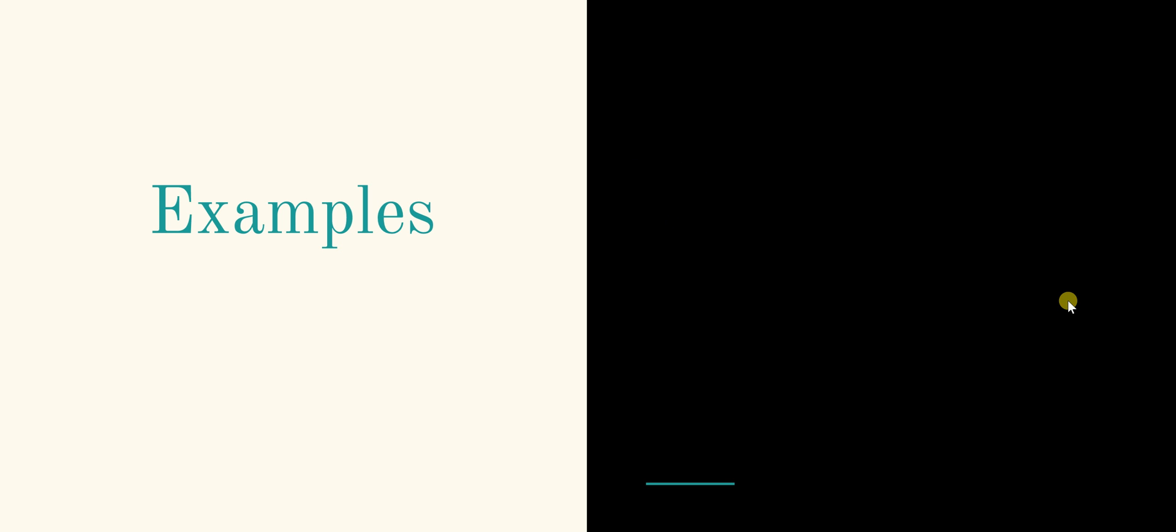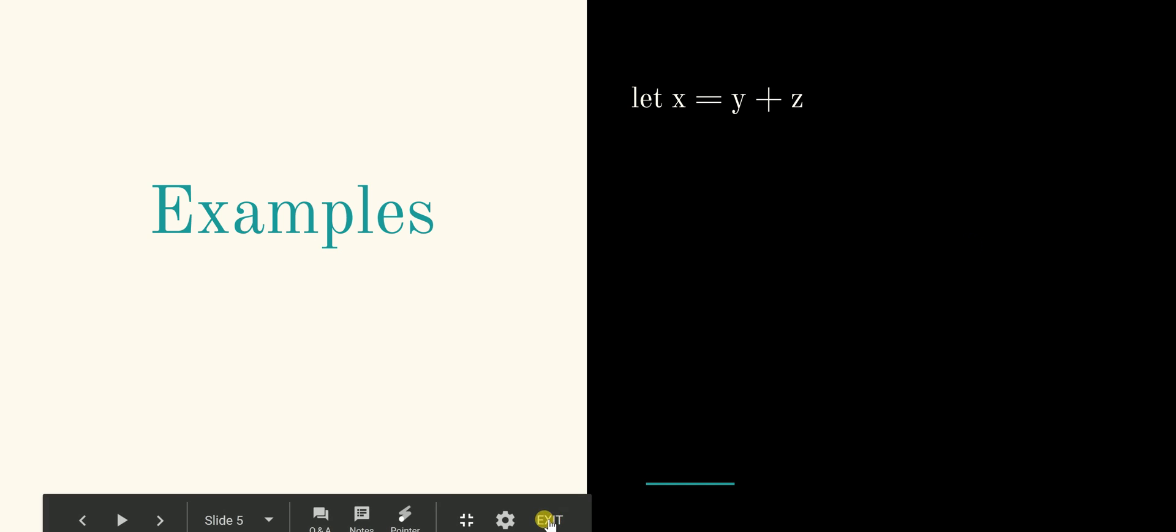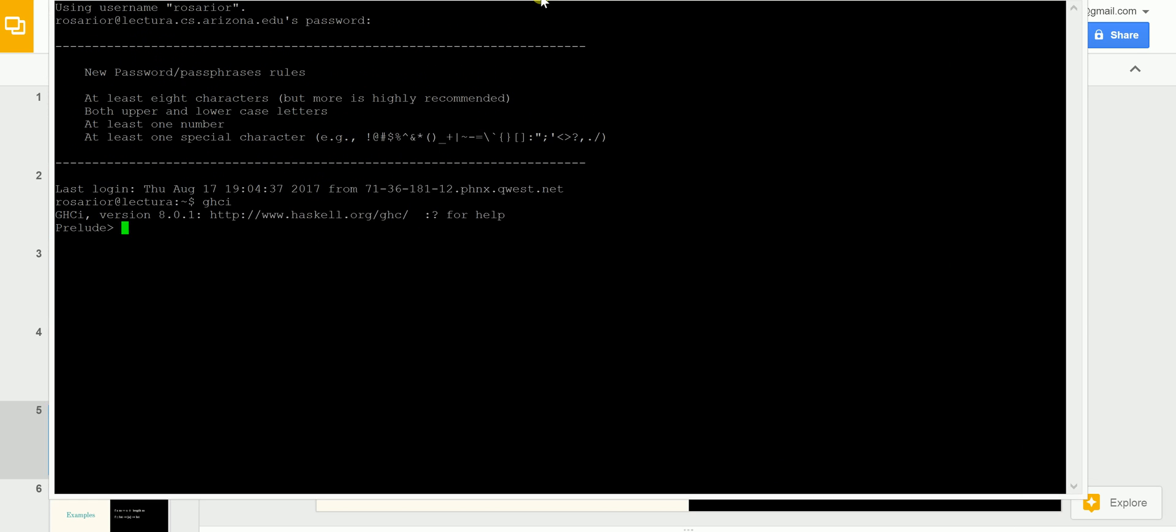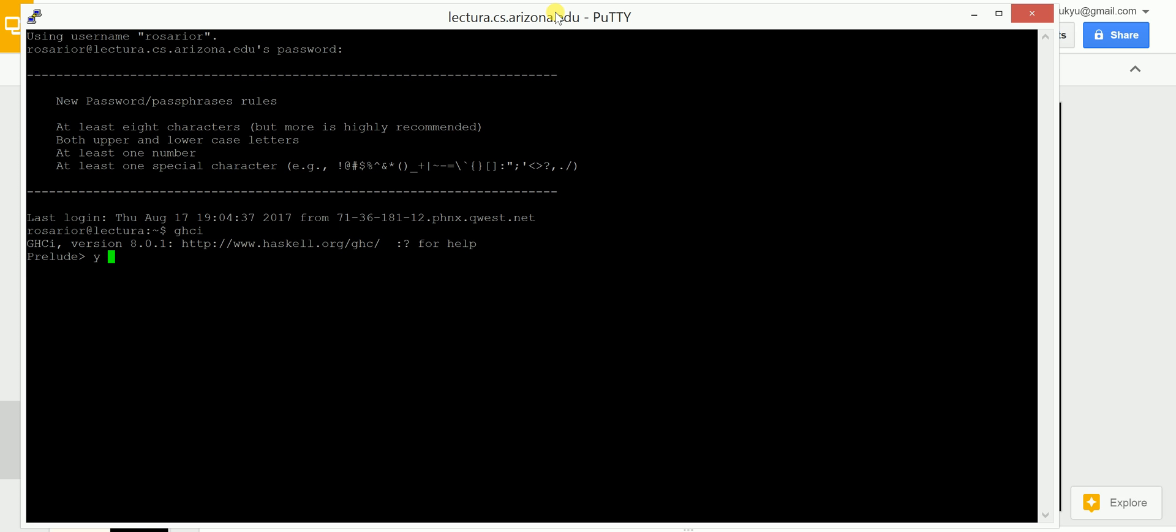Okay, so we are going to use let x equal y plus z as an example. So we are now going to go to putty to do this. So I'll start up GHCI and we're going to give numbers to y and z. So then y is equal to 1, z is equal to 2. So then let x equal y plus z.